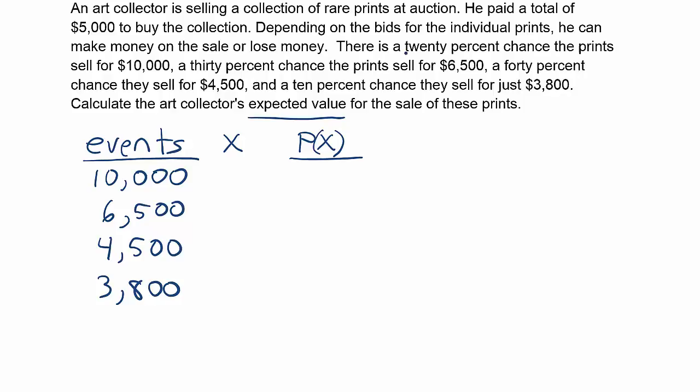So we can actually add the probabilities to this as well right away. So it says again, 20% chance that they sell for $10,000. So we'll write that as a decimal as 0.20. It says that there's a 30% chance they sell for $6,500, so 0.30. A 40% chance, right, that they sell for $4,500. And then finally there's just a 10% chance they sell for $3,800. And if you add these probabilities together, you see that they do add up to one, right? And that's what they need to add up to. So we're good. We have all the probabilities, we have all the possible outcomes then.